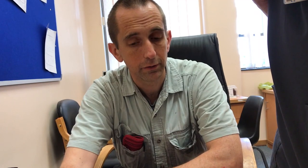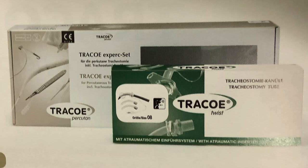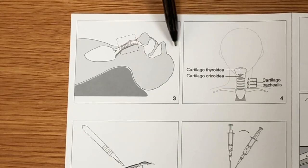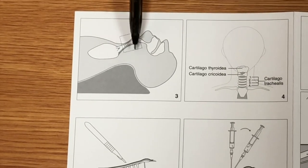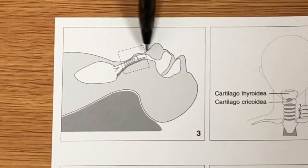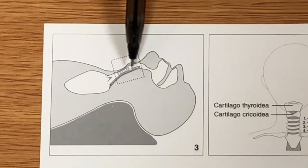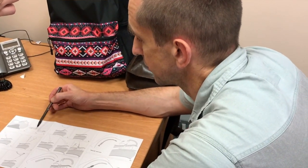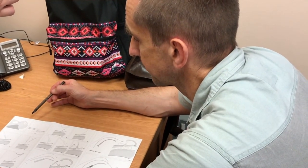Okay, percutaneous tracheostomy using the trachea dilator set. First, position the patient with the trachea well forward. Prior to positioning, the endotracheal tube needs to be removed from the lower trachea.